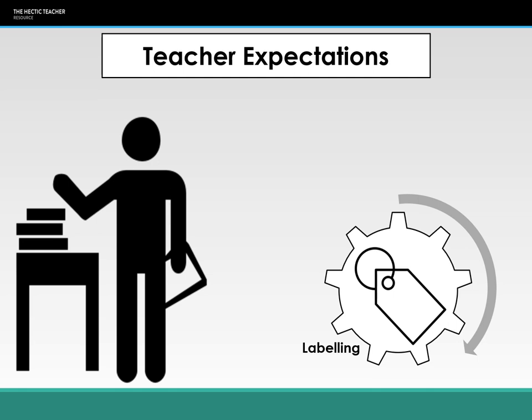Labelling can lead to working class underachievement because working class students are more likely to be labelled negatively, which could lead to a self-fulfilling prophecy. There is a negotiation phase, but it can lead to students from working class backgrounds believing that they're not academic, that they're not very good at school, and therefore that they are destined to fail — so why try?